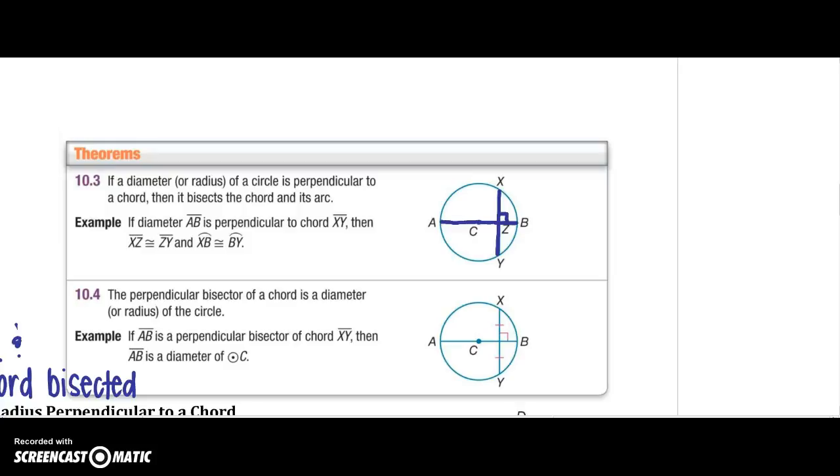then I know two things. I know the first thing, that it bisects the chord, so XZ would be congruent to YZ. And I also know it bisects the arc, so arc XB will be congruent to arc YB.